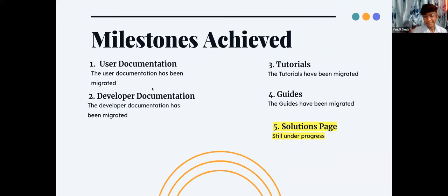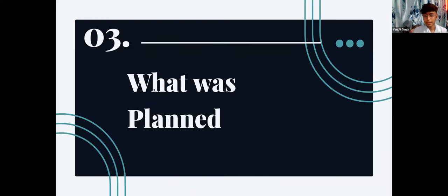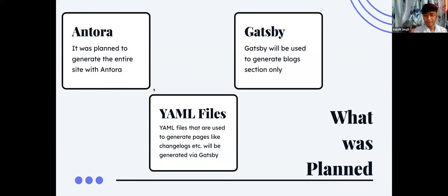So far I have completed the user documentation, developer documentation, tutorials, and guides. The solutions page is still under progress since it has a different layout than all the other pages. Originally, the plan was to generate the entire site with Antora except YML files and the blog section with Gatsby. Since we're in open source, community feedback is really important, so we asked the community what they think.